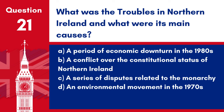Question 21: What was the Troubles in Northern Ireland and what were its main causes? a. A period of economic downturn in the 1980s. b. A conflict over the constitutional status of Northern Ireland. c. A series of disputes related to the monarchy. d. An environmental movement in the 1970s. Answer: b. The Troubles was a violent conflict that lasted from the late 1960s to the late 1990s, centered on whether Northern Ireland should remain part of the UK or join the Republic of Ireland.